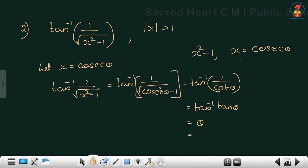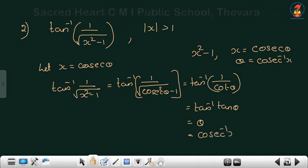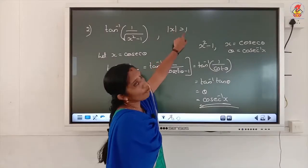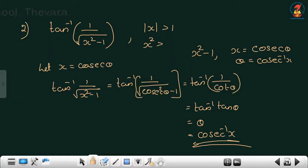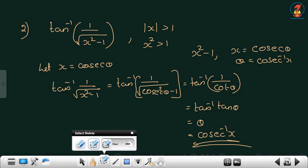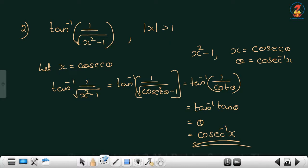Theta means cosec⁻¹x. Note that the condition |x| greater than 1 is required. When we square it, x² > 1, and only then is the root defined. Since the root is in the denominator, it must be greater than 0. That is why the condition is given — otherwise the function is not defined.